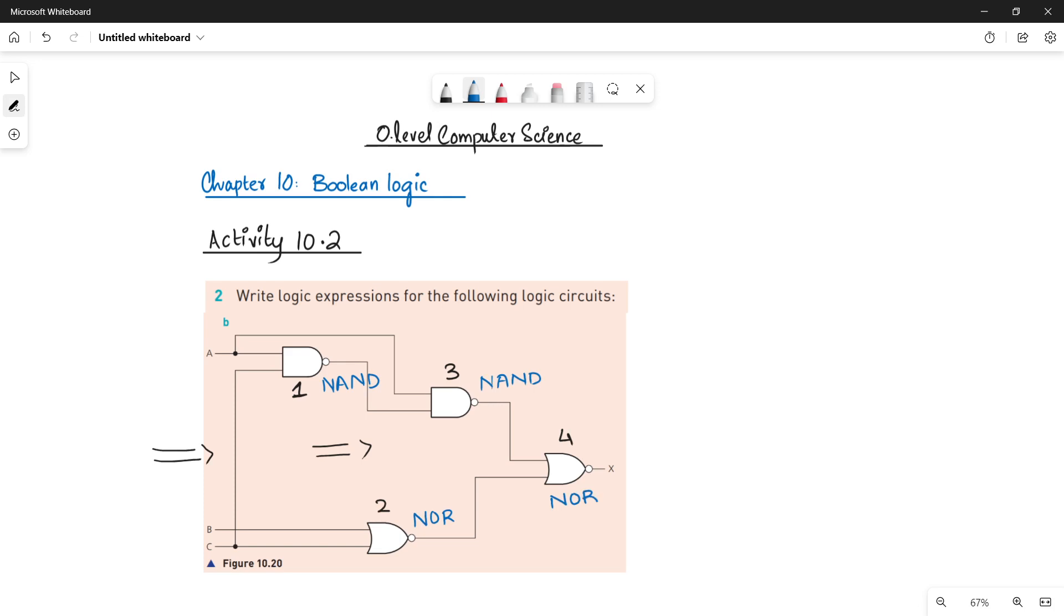Let's start with gate number one. Logic gate one is a NAND gate between two inputs. The first input is A and the second input is C. Look at here, it is coming from C. And the operation or logic gate will come in between, which is NAND. So it's an operation between A NAND C. This is your logic gate one.